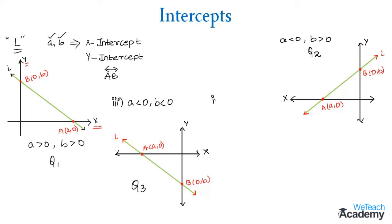And the next condition where A is greater than 0 and B is less than 0, then the line AB lies in quadrant 4.